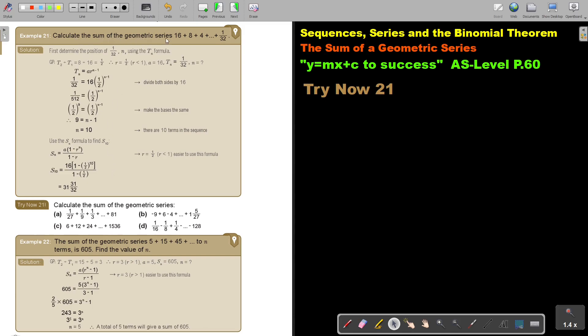Calculate the sum of the geometric series. They give you the first three and they give you the last term. The problem is you don't know what's that position, so you must first find that position. So first determine the position, the value of N, using the TN formula.